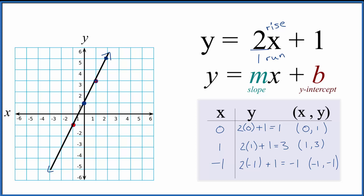Likewise, we could go in the negative direction — down 1, 2, over 1. Down 1, 2, over 1. And we could just keep going. All of these points are on our line for y equals 2x plus 1. So what I like to do is use this slope-intercept method — it's quicker once you learn it — and then put some points in just to make sure they fall along that same line.